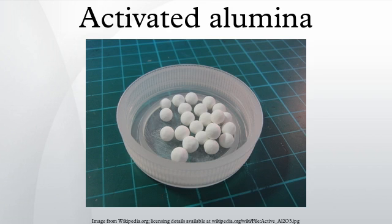Activated alumina is manufactured from aluminium hydroxide by dehydroxylating it in a way that produces a highly porous material. This material can have a surface area significantly over 200 m²/g. The compound is used as a desiccant and as a filter of fluoride, arsenic, and selenium in drinking water. It is made of aluminium oxide, the same chemical substance as sapphire and ruby, and has a very high surface area to weight ratio due to the many tunnel-like pores that it has.